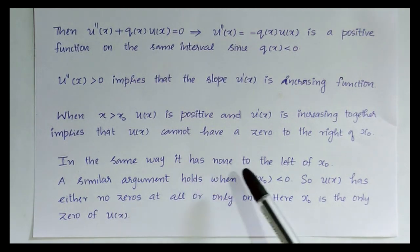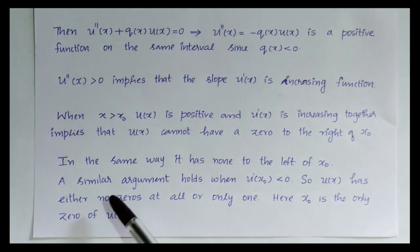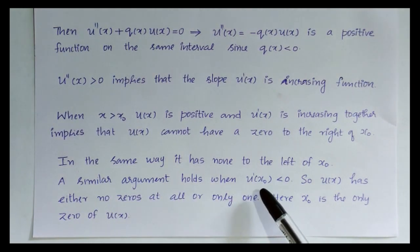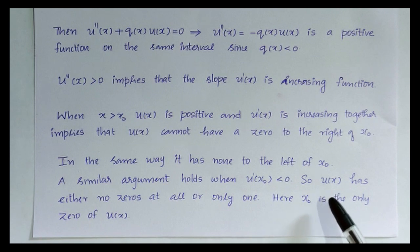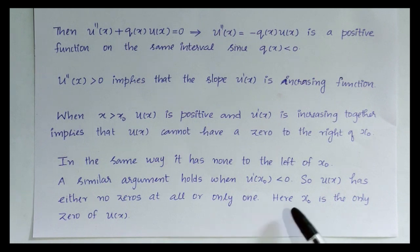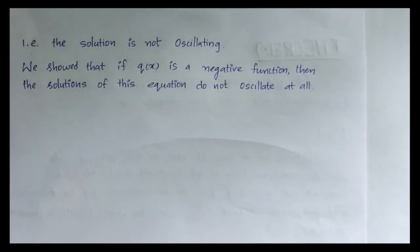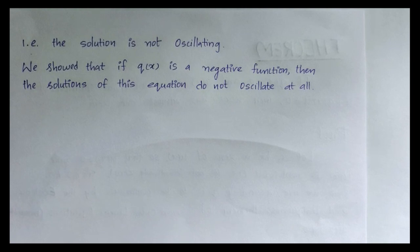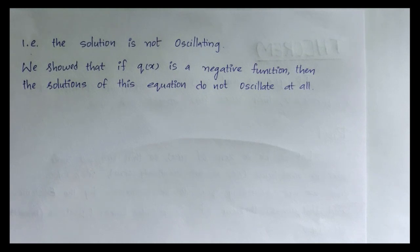That is, when x > x0, u(x) is positive and u'(x) is increasing — together these imply that u(x) cannot have a zero to the right of x0. In the same way, it has none to the left of x0. A similar argument holds when u'(x0) < 0. So u(x) has either no zeros at all or only one, meaning x0 is the only zero of u(x). That is, u(x) has at most one zero — the solution is not oscillating. Here we showed that if q(x) is a negative function, then the solutions do not oscillate at all.